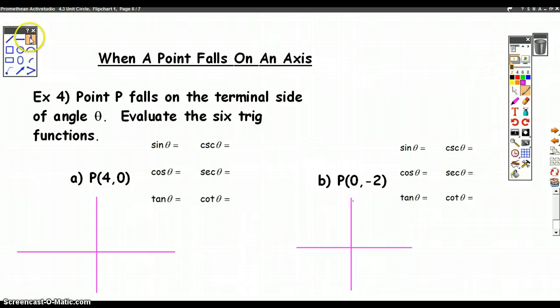Got our quadrants set up. Point P falls on the terminal side of angle theta, so the point (4,0) falls on the terminal side of angle theta. The terminal side is where we end - we start facing the positive x-axis direction and we rotate. The point (4,0) would just be right somewhere like right here.